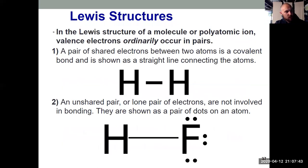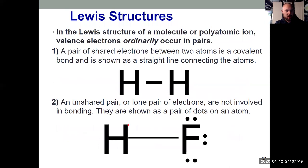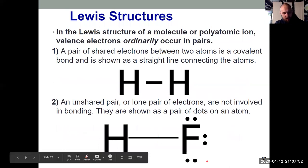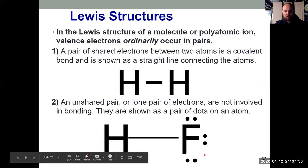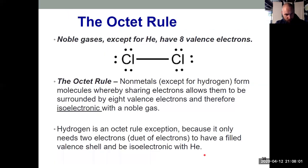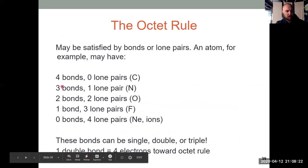Hydrogen is happy having two electrons shared with the other atom. Fluorine follows the octet rule: it's surrounded by two electrons in the bond, plus four more as lone pairs, totaling eight. We can satisfy the octet rule in a variety of ways — combinations of bonds and lone pairs. Carbon likes four bonds and no lone pairs. Nitrogen likes three bonds and one lone pair: three bonds times two electrons equals six, plus one lone pair of two, equals eight.